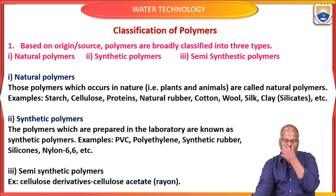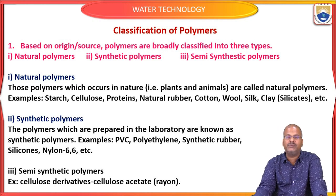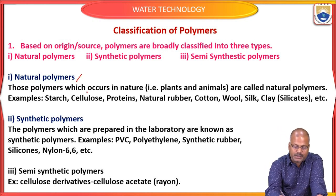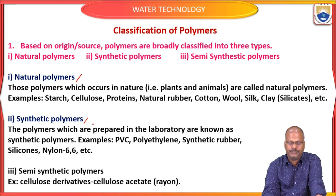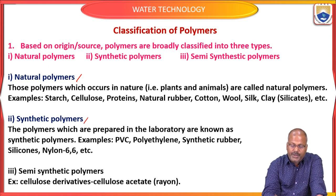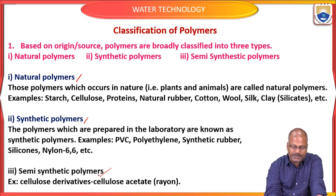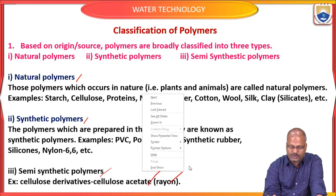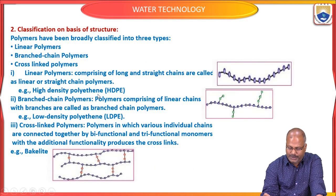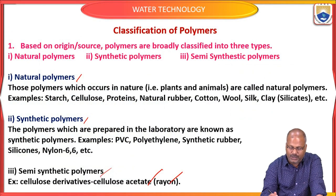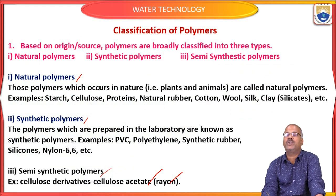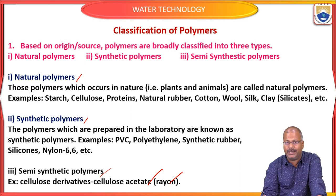Semi-synthetic polymers are a combination of natural and synthetic. Examples include cellulose derivatives: cellulose acetate and rayon. Cellulose is a natural polymer, whereas cellulose acetate — also called rayon — is semi-synthetic.